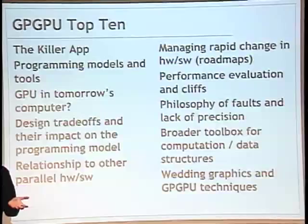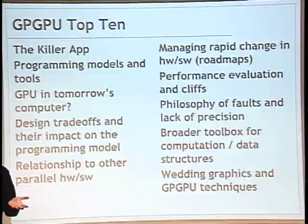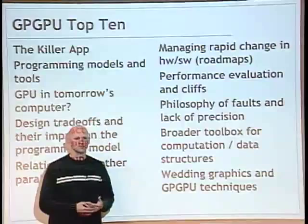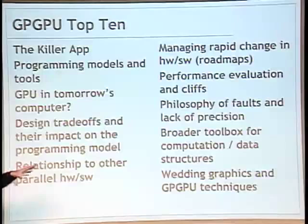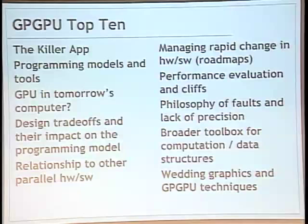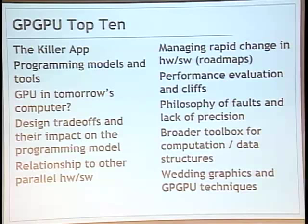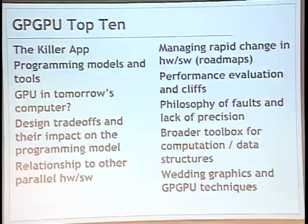Problem nine: better integration of graphics and GPGPU. GPGPU people say the best GPU computing application is graphics — it's just another instance of an application. The future killer app is likely a graphics pipeline that incorporates GPGPU pieces like physics or AI as part of the pipeline. Right now it's kludgy to take GPU compute results and use them in graphics — high overhead. We'd like to see that get cleaner.